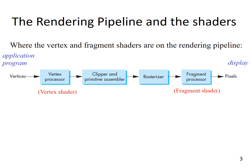Here we have the rendering pipeline again. Where exactly does the vertex and fragment shaders lie on this pipeline? As shown here, the vertex processor is where the vertex shader lies, and the fragment processor is where the fragment shader lies. The application program sits here, and the output of the pipeline is pixels that are displayed on the screen.